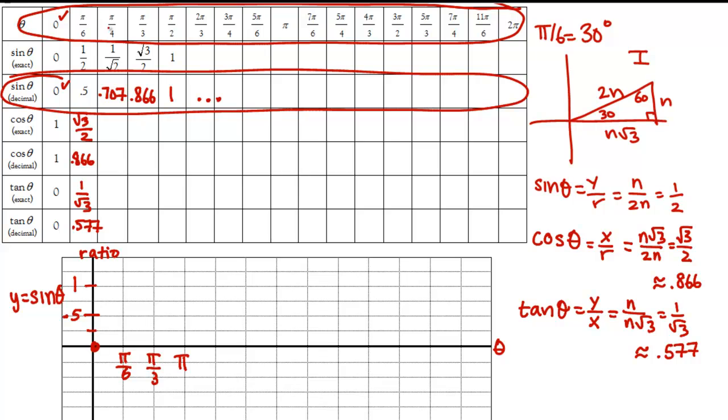I'm going to plot the point (0, 0). My angle of 0 has a sine ratio of 0. Then my angle is pi over 6, and my sine ratio is 0.5. Then I'm going halfway between 30 and 60 to 45 degrees, which is pi over 4, and I'm going to plot 0.707, which is slightly below 0.75.